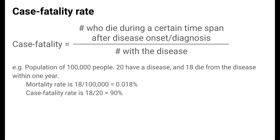For example, in a population of 100,000 people, 20 have a certain disease, and 18 die from that disease within one year. The mortality rate for this disease is 18 out of 100,000, or 0.018%, which is pretty low.